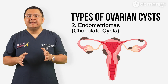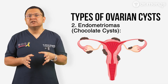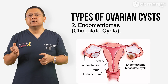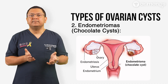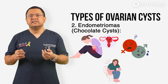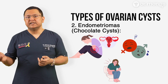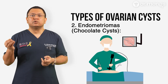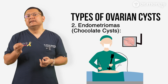Endometriomas, or chocolate cysts, are linked to endometriosis. These cysts develop when endometriosis tissue grows on the ovary and forms a blood-filled cyst. It is important to note that an endometrioma never occurs in isolation — it is always accompanied by deeper disease. Signs include chronic pelvic pain that worsens around the menstrual cycle, painful intercourse, and painful bowel movements or urination. Endometriomas do not resolve on their own and often require surgical removal. It is crucial to excise all affected tissue, not just the cyst, to ensure complete disease clearance.